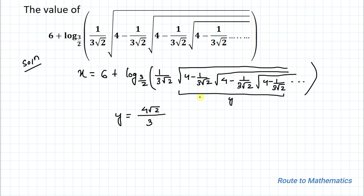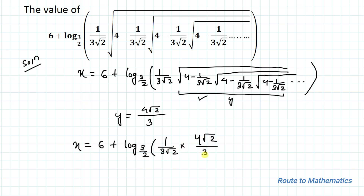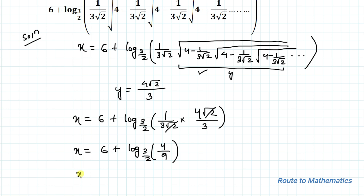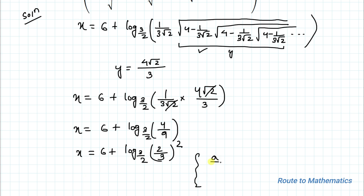Substituting the value of y back, we have x = 6 plus log base 3/2 of (1 divided by 3√2) multiplied by (4√2 divided by 3). The √2 terms cancel, giving x = 6 plus log base 3/2 of (4/9). We can write 4/9 as (2/3)², and applying the exponential rule that (a/b)^n = (b/a)^(−n), we rewrite this as (3/2)^(−2).